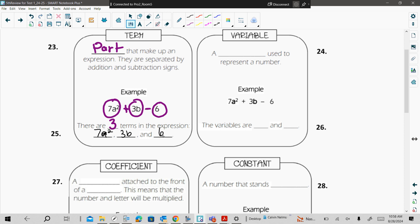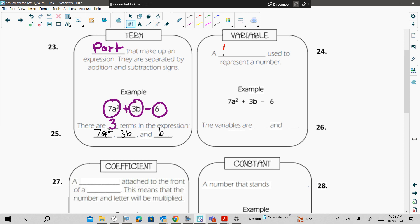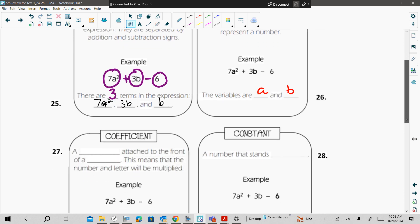Now, a variable. Yep, it's a letter. A letter used to represent a number. So in our example, 7a squared plus 3b minus 6, what are the variables? Yeah, the variables are a and b. Those are the two letters we see in the expression.